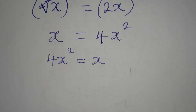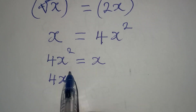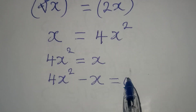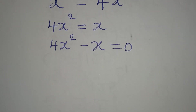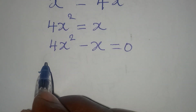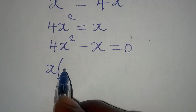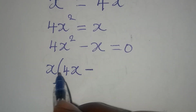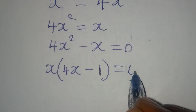Now let's bring everything to the left, so we have 4x squared minus x equals 0. This is a quadratic equation and we can solve it by factorization. x is common, so we have x times 4x minus 1 equals 0.